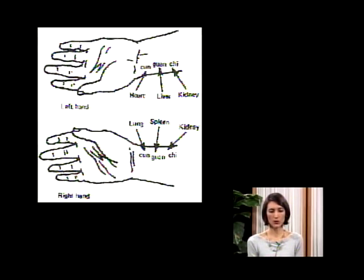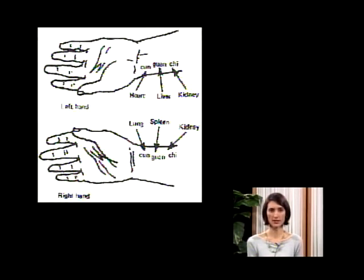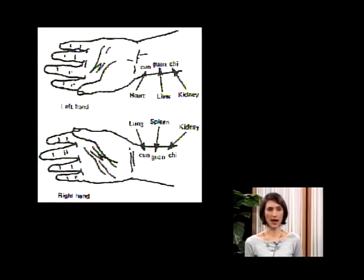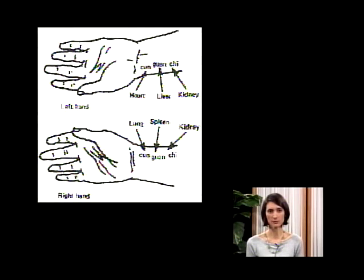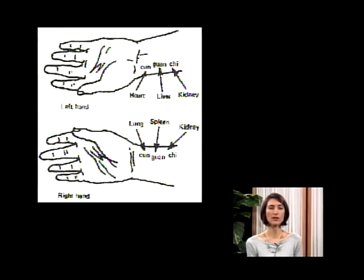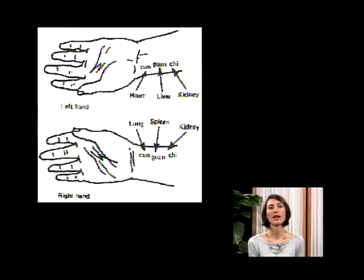On the right hand, the first position is the lungs, the second position is the spleen, and the last position again is the kidneys. In Chinese medicine theory, the air we take in through the lungs plus the nutrients absorbed from food come together to make qi and enter the entire body. So when we take the right pulse together with three fingers, we can see the quality of the qi or energy, and separately we can see the function of the lungs, the digestive system, and the kidneys.